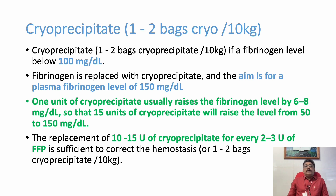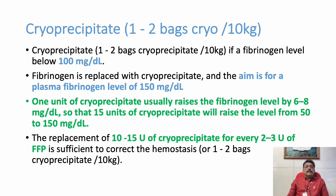Cryoprecipitate is given when fibrinogen levels are less than 100 mg/dL. It is prepared from plasma and the dose is 1 to 2 bags per 10 kg body weight. The aim is to achieve a plasma fibrinogen level of 150 mg/dL. One unit of cryoprecipitate raises fibrinogen by 6 to 8 mg/dL, so 15 units can raise the level from 50 to 150 mg/dL. The replacement ratio is 10 to 15 units of cryoprecipitate for every 2 to 3 units of FFP.